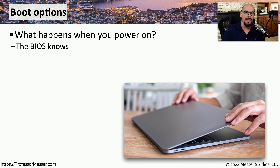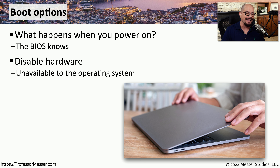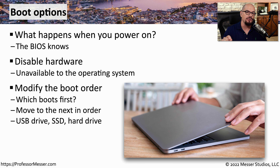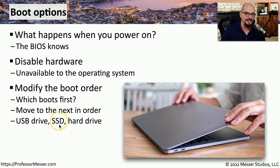When we power on our system, the BIOS is in control. It has a lot of different configuration settings that determine what the BIOS should do next. Inside of the BIOS, there are some settings that can disable some of the hardware of your computer, making it invisible to the operating system. You can also configure where the BIOS should go to boot your system — for example, look for a bootable USB drive, then the SSD, then the hard drive. You can determine which boot devices are available and in which order they should be checked.